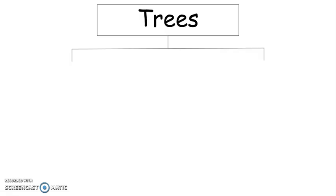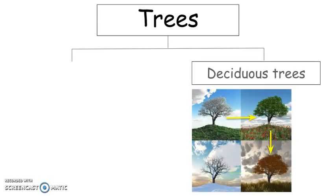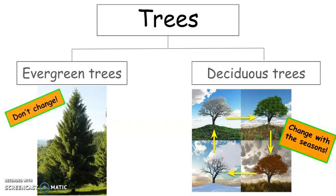Hi everyone! Welcome back! In the last video, we talked about the two main types of trees. Deciduous trees, which change with the seasons, and evergreen trees that don't change and are always green. Today we are going to review and practice what we learned.